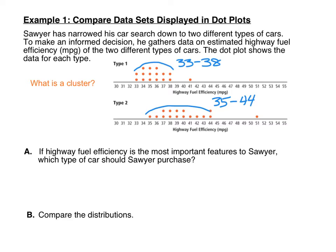Now that we've identified the clusters, let's go ahead and answer the questions below. If fuel efficiency is the most important feature to Sawyer, which type of car should he purchase? The fuel efficiency is the miles per gallon. Type 1 cars were clustered from 33 to 38, but type 2's cluster is higher at 35 to 44. Most of that cluster is above 38, so if Sawyer is concerned with the best fuel efficiency, he should choose type 2 — it has a higher cluster by about 4 miles per gallon.